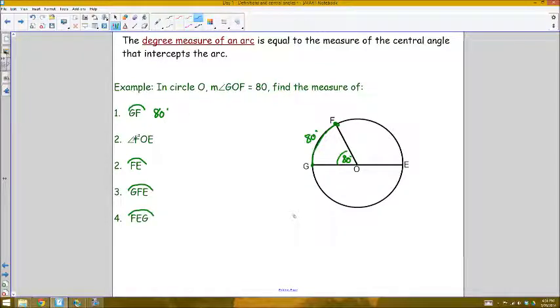If I wanted to find measure of angle FOE, F to O to E, well since GOE is a diameter passing through the center of the circle and it's a straight line, any straight line has 180 degrees in it so I would need another 100 degrees to make up that 180.